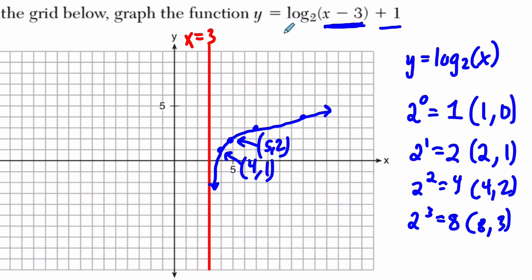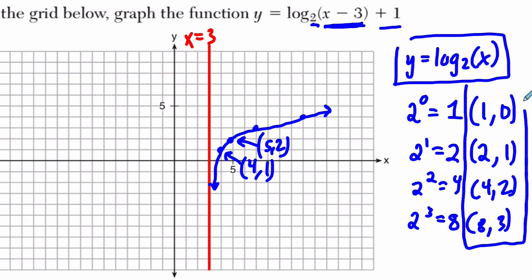So when you're dealing with a logarithmic function, look at the base. Write the parent function that shares that base. Generate some points using an exponential relationship, and then flip the points around to get your logarithmic function. These are our parent points here, right, and then perform any translations that you see. In this case, you went 3 to the right and up 1. Alright, I hope that helps.